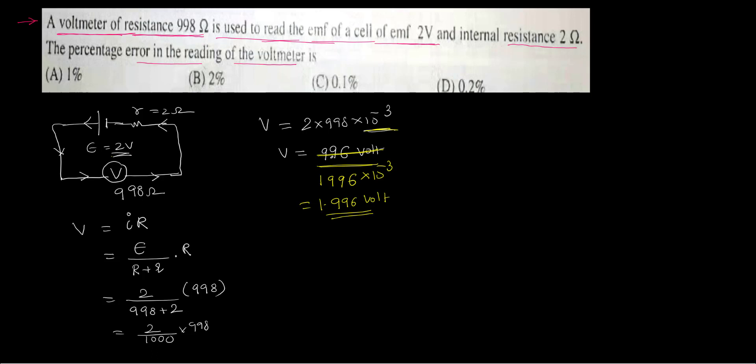So it is supposed to read as 2 volts, but it is reading it as 1.996 volts. So what's the error? The error of that voltmeter that's happening because of the internal resistance that it has is 2 volts minus 1.996, that is 0.004 volts. So what is the percentage of the error if you want to calculate?